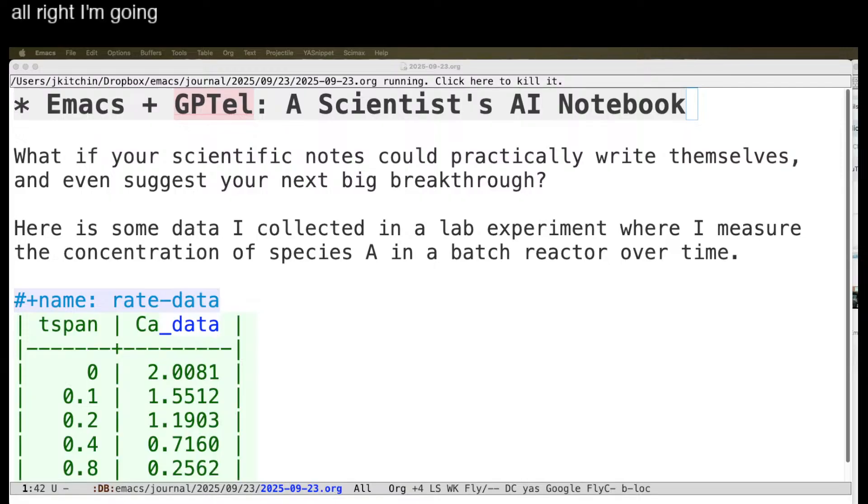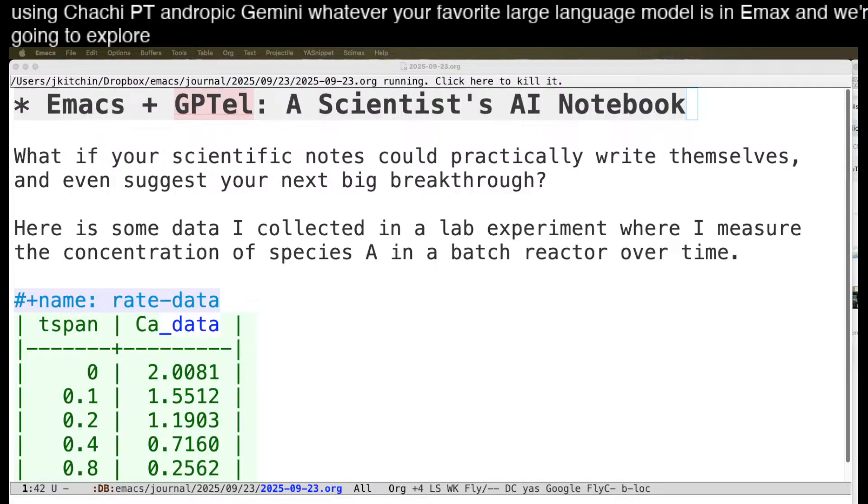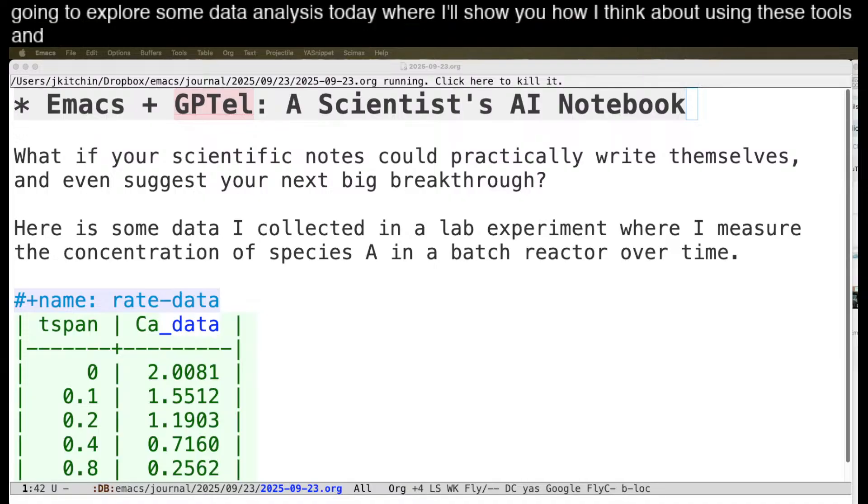Alright, I'm going to look at another example of Emacs and GPTEL. GPTEL is an ELISP implementation of using ChatGPT, Anthropic, Gemini, whatever your favorite large language model is in Emacs. We're going to explore some data analysis today, where I'll show you how I think about using these tools and different ways you might consider it.